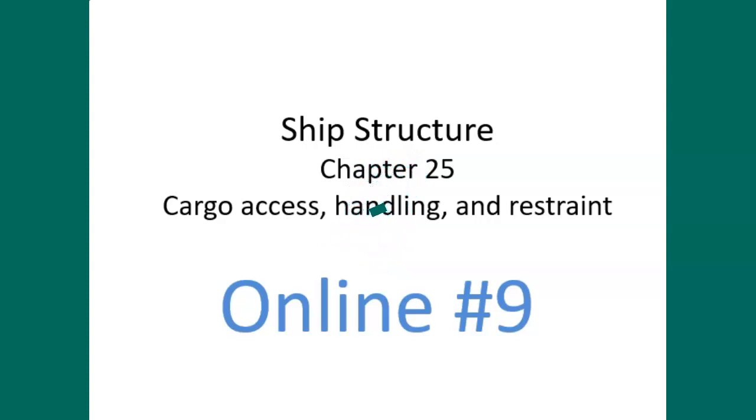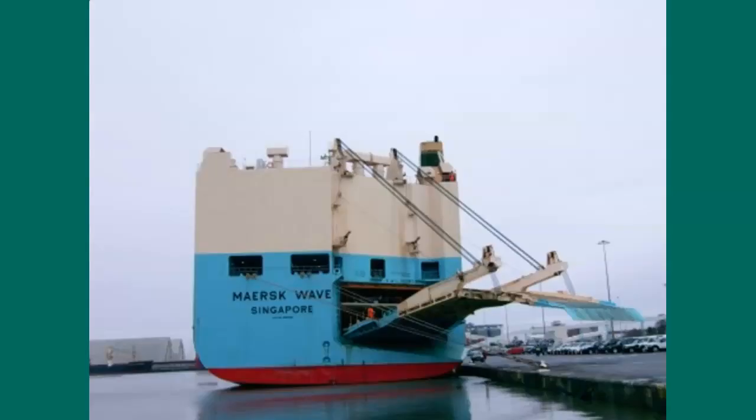Hello class, it's number 9 online, Ship Structure Chapter 25, Cargo Access, Handling and Restraint. We're going to spend most of the time talking about cargo access and cargo handling. Here we've got the Maersk Wave, and we're going to talk about Ro-Ro ships, stern and bow and side access to Ro-Ro.